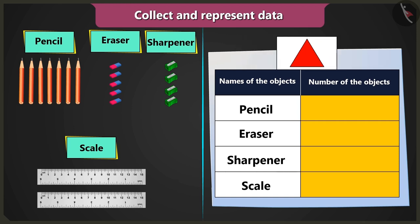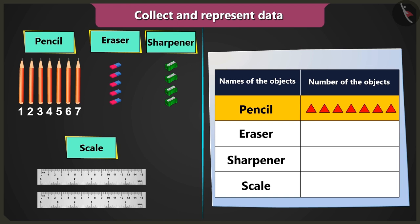So we will draw triangles to fill the table. Okay, you have seven pencils. So you have to draw seven triangles in the column count of objects.